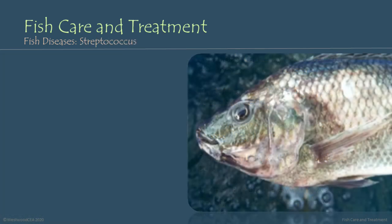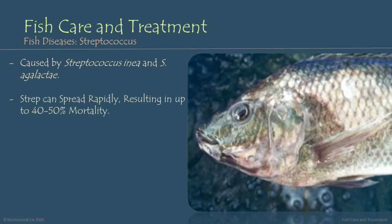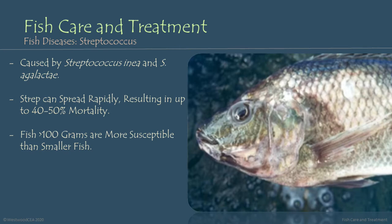Another fish disease that I really wish was more rare is Streptococcus. Streptococcus can be caused by Streptococcus iniae or by Streptococcus agalactiae. Streptococcus infections can spread very rapidly through a fish population, and this can result in mortality rates of up to 40-50% in a very short period of time. Fish that are more than 100 grams — so larger fish — are typically more susceptible to Streptococcus infections than smaller fish.